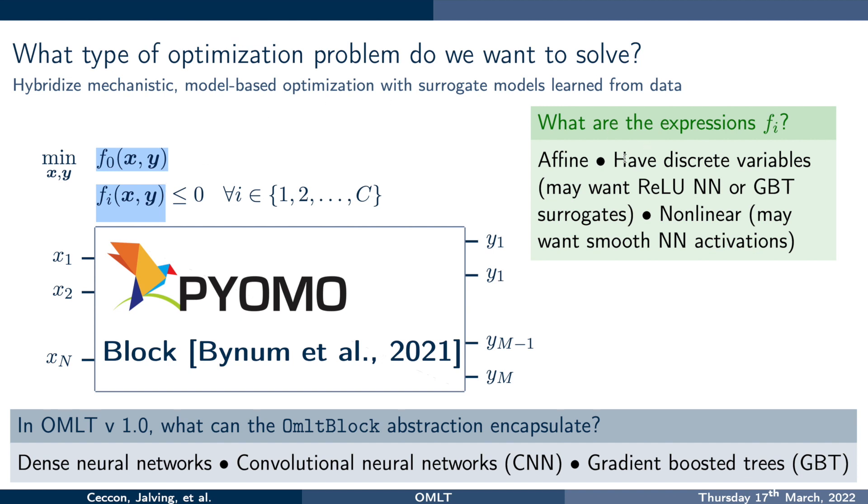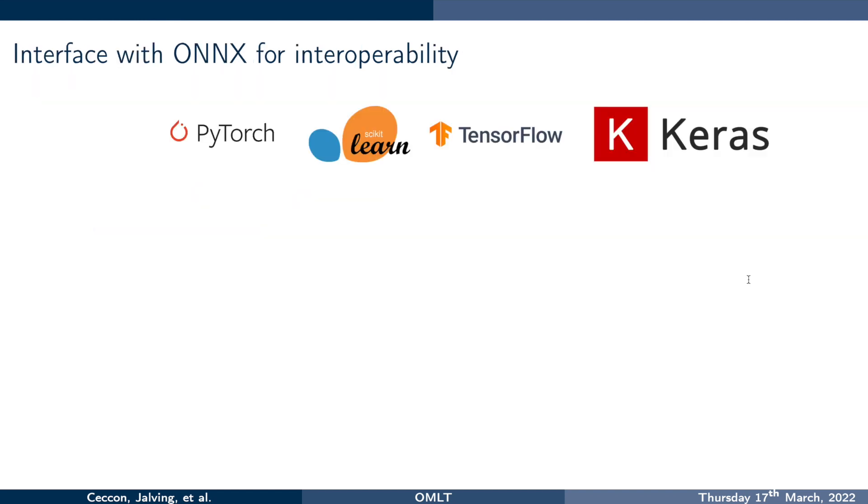Now what we might need to keep in mind, and I'll mention this a bit more later, is that we will want our Pyomo block to have inside of it functions that somehow match these expressions f. So for instance, if there are discrete variables in the functions that we're writing down, we may want to be using ReLU neural network or gradient boosted tree surrogates. If we are using non-linear functions f, we may want smooth neural network activations. So we mentioned the problem that we want to solve, but we're going to need to be able to go from a higher order neural network or gradient boosted tree representation into Omelette.